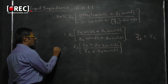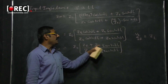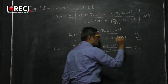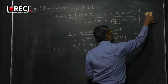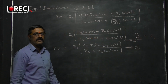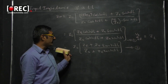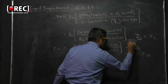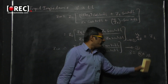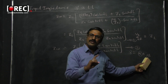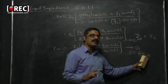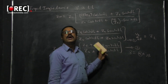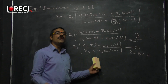This is equation number 2, the generalized expression for input impedance for a lossy transmission line. It is lossy because γ equals α plus jβ, where α is the attenuation constant and β is the phase shift constant. When α is not equal to zero, it corresponds to a lossy transmission line. Equations 1 and 2 are the input impedance expressions for the lossy case.